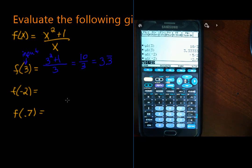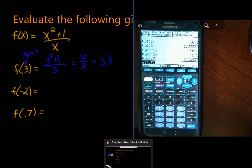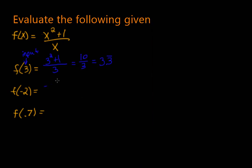Alright, let's do it for one more. Let's do it for this guy over here, which is .7. So we're going to have y1 of .7 equals, and we get 2.12857. Great! Let's go ahead and write these down. So f of negative 2, that's negative 5 halves, which is negative 2.5. And when we entered .7, let's see, we got 2 point, and let's round it to 2 decimal places, 2.13.